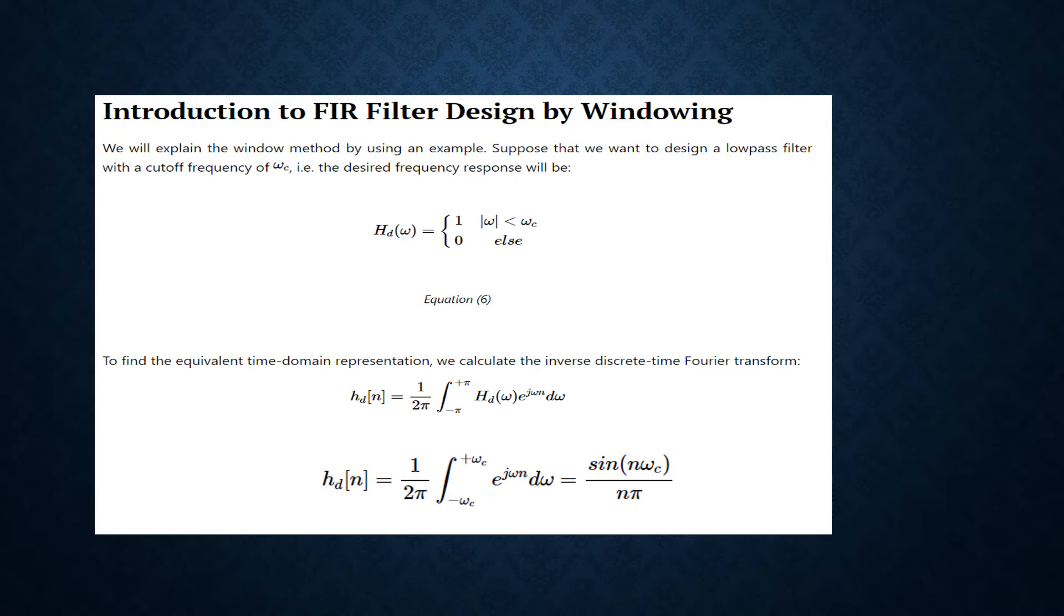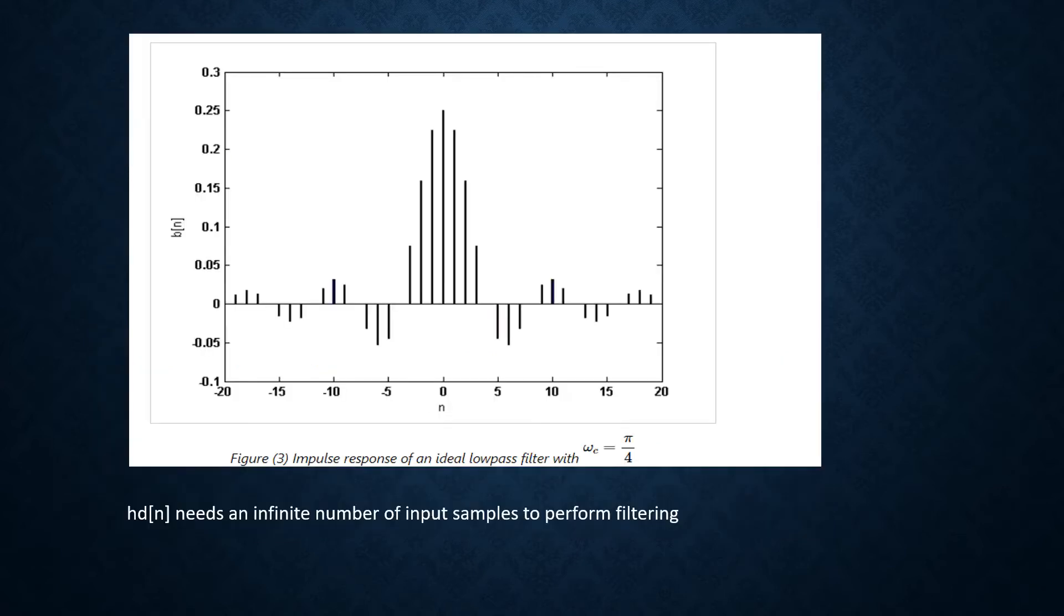To find the equivalent time domain representation, we can calculate the inverse discrete time Fourier transform from the below formula. Here, we can see the figure of impulse response of ideal low pass filter with omega c equal to pi by 4.